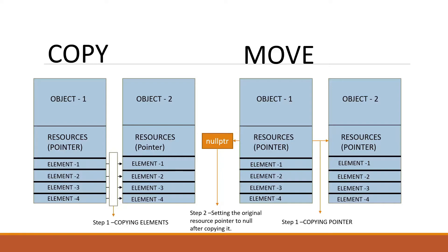It's also fast because in the case of copy we need to copy all four elements, whereas in move we just need to copy the resource pointer — that's step one. In step two, since this is the move operation, object one has to give up its resource to object two. We set the resource pointer of object one to null pointer, so that only object two has access to that memory location. Step one: copy the resource pointer. Step two: set the original resource pointer to null after copying.